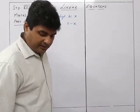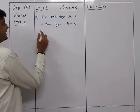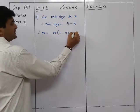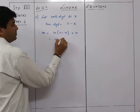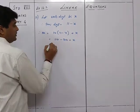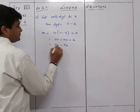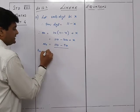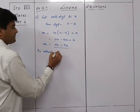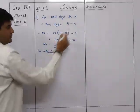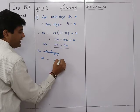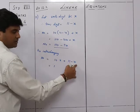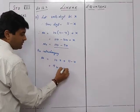The original number equals 10(11 minus x) plus x, which is 110 minus 10x plus x, giving 110 minus 9x. On interchanging the digits, the new number is 10x plus (11 minus x), which equals 9x plus 11.